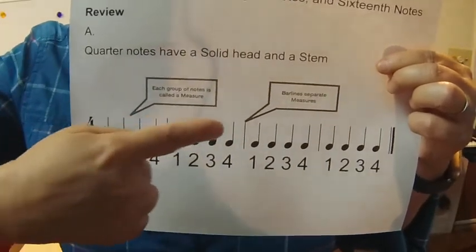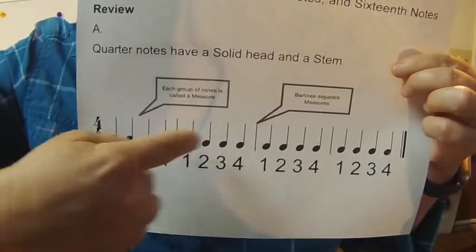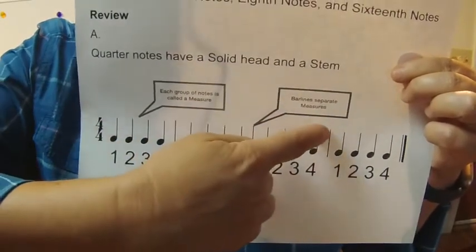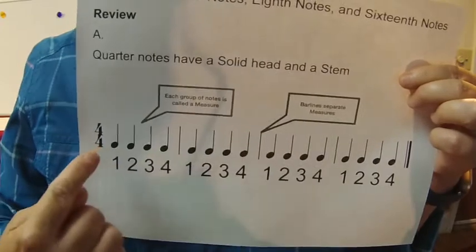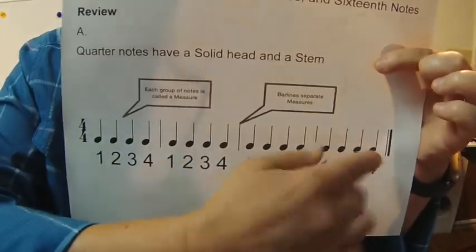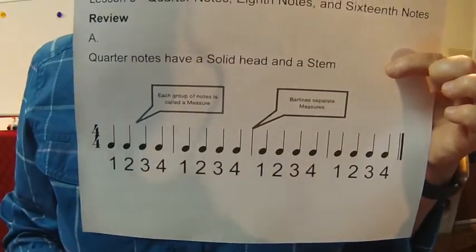We also know that these lines right here, they don't have heads on them, they're not notes, they're bar lines. And each bar line separates the groups or the measures. Then we have a double bar line, which means that's the end of the piece of music.